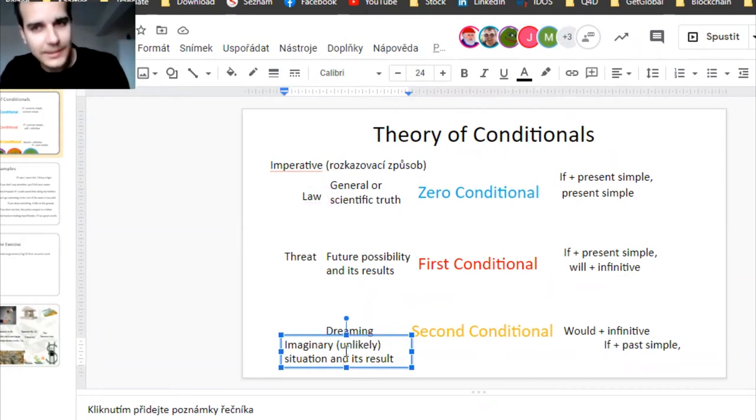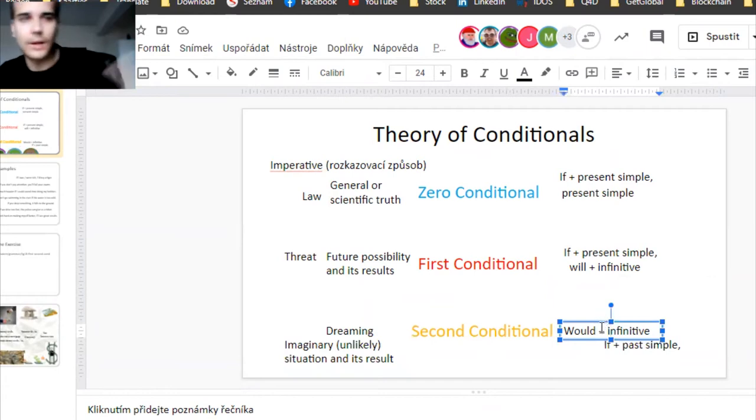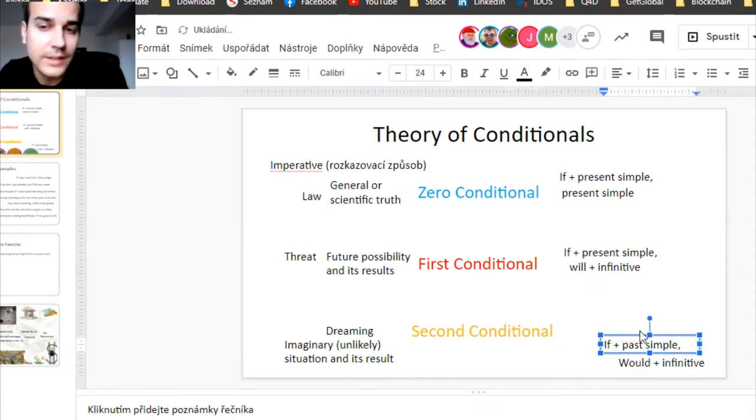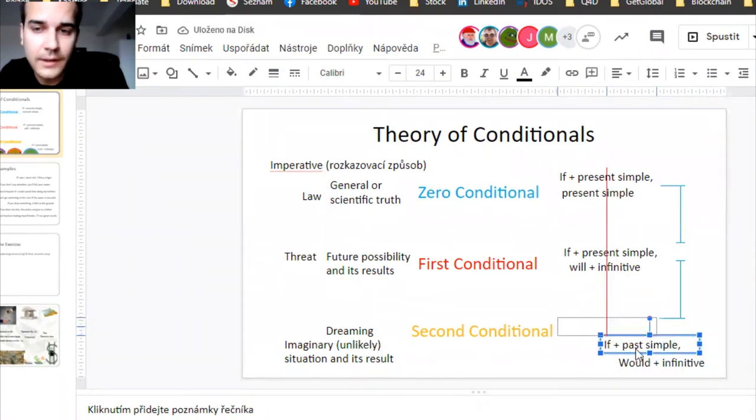All right, now I'm talking about the result, so if A happened then B would happen, and A cannot happen. It's very unlikely. It's either my dream or I'm talking about some situation or some kind of situation which can never happen, or at least it's very unlikely.